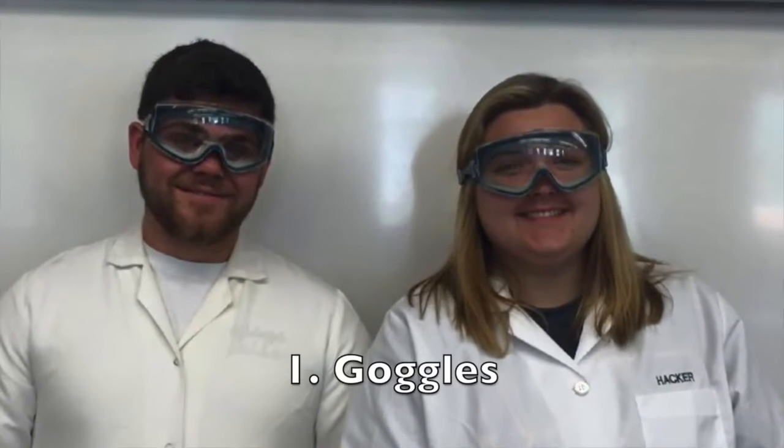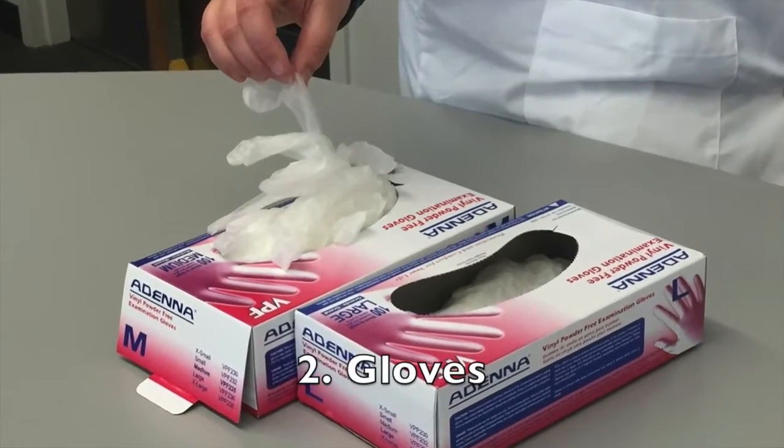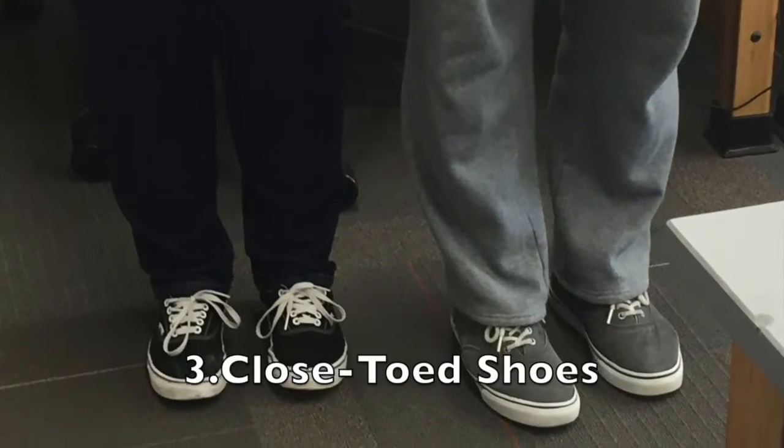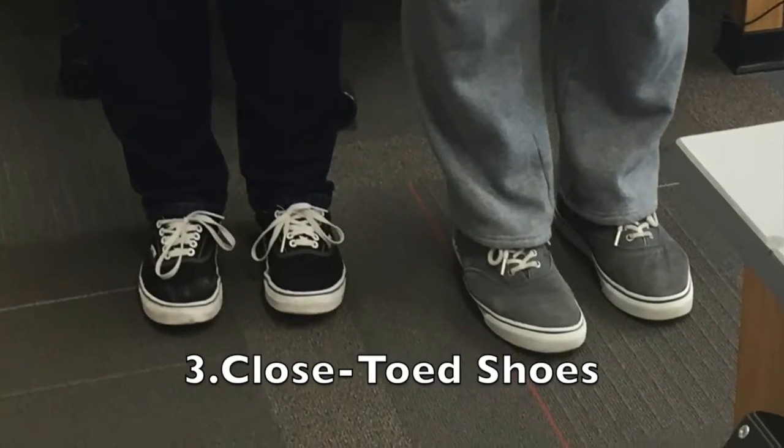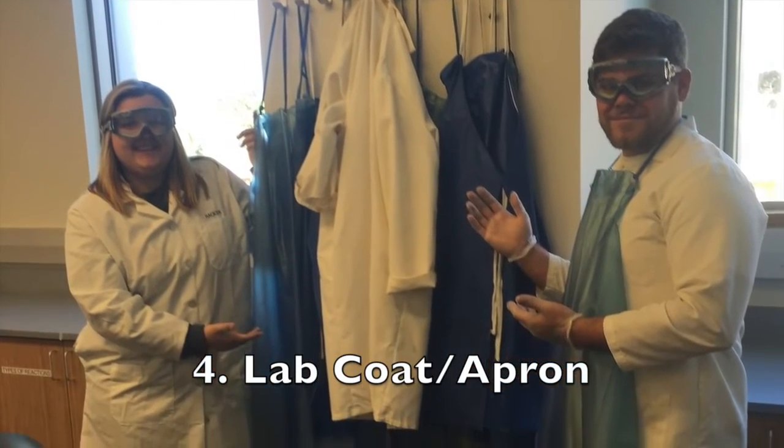Make sure that you're wearing appropriate safety goggles. Also, while working with any chemicals, it is important to wear gloves just in case anything spills on your hands. Closed-toed shoes are required while performing your laboratory techniques. Finally, the use of a lab coat or apron is optional, but always advised.